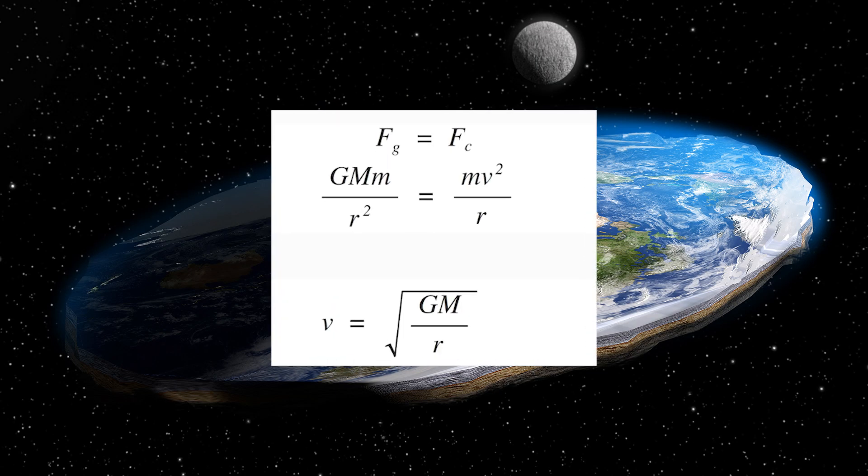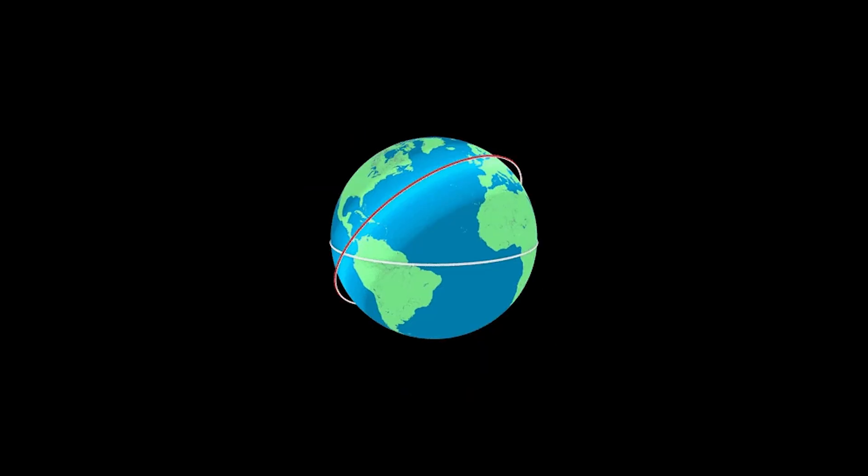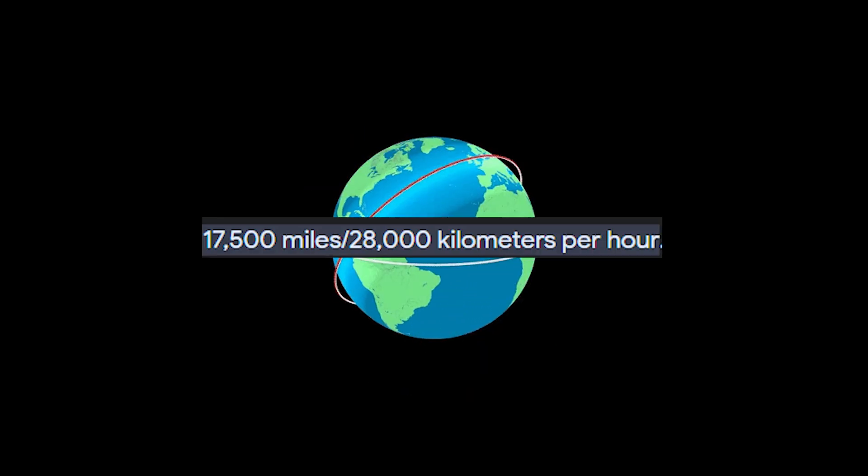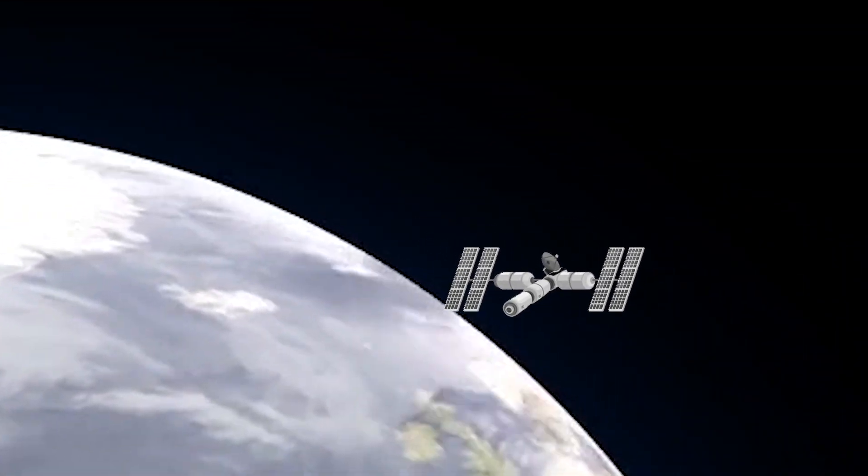Here are the formulas for this example. The same logic is applied to the ISS. So because the ISS is moving with the right high velocity, it'll constantly be falling towards the Earth, but be basically missing it.